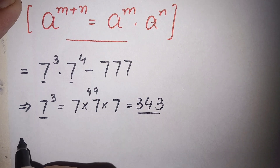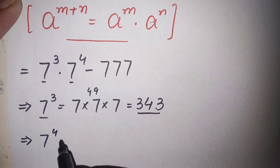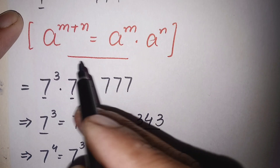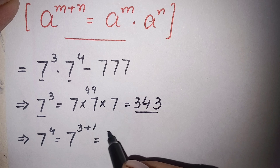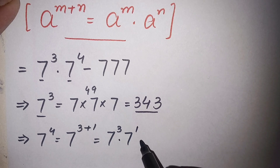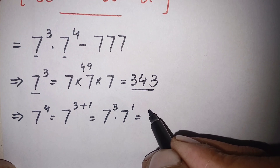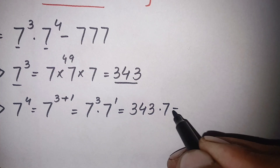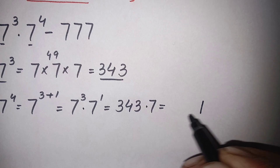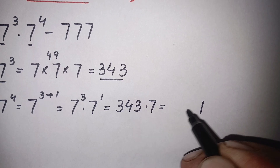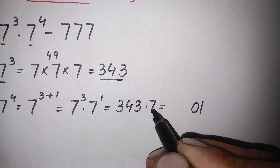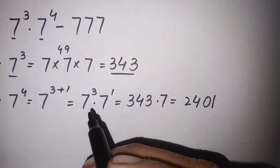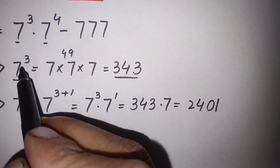Now let's find the value of 7 raised to power 4. We can write 7 raised to power 4 as 7 raised to power (3+1). Using the exponential identity, this becomes 7 raised to power 3 times 7 raised to power 1, which is 343 times 7. Multiplying: 7 times 3 is 21, write 1 carry 2; 7 times 4 is 28 plus 2 is 30, write 0 carry 3; 7 times 3 is 21 plus 3 is 24. So 7 raised to power 4 equals 2401.